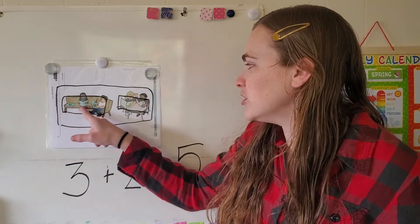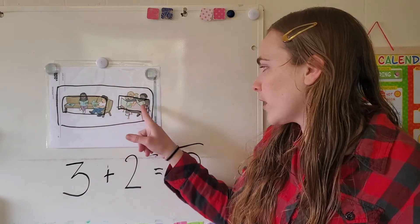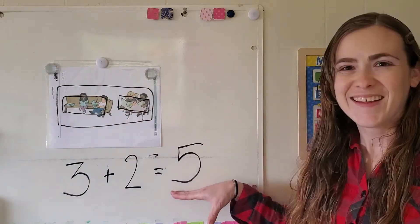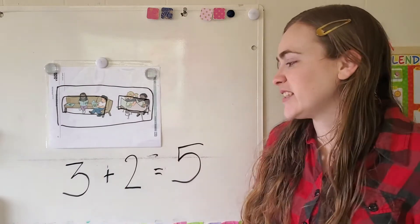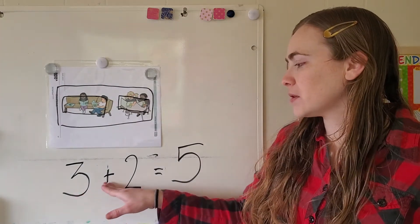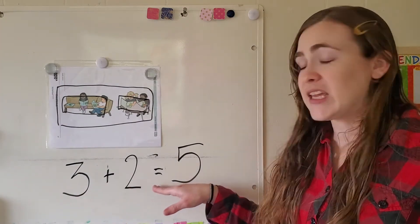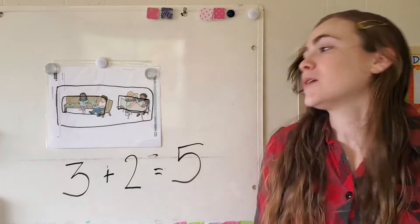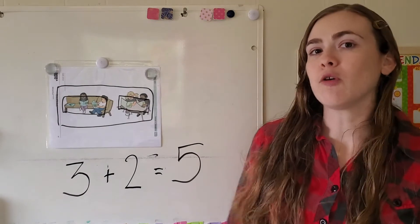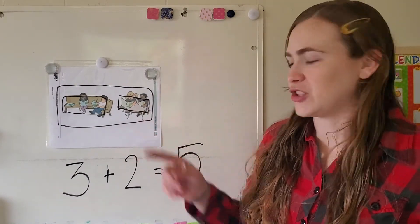One, two, three, four, five. Hey, we got it right. Our full number sentence is three plus two equals five. And that equation or number sentence helps us figure out what's going on in this picture.